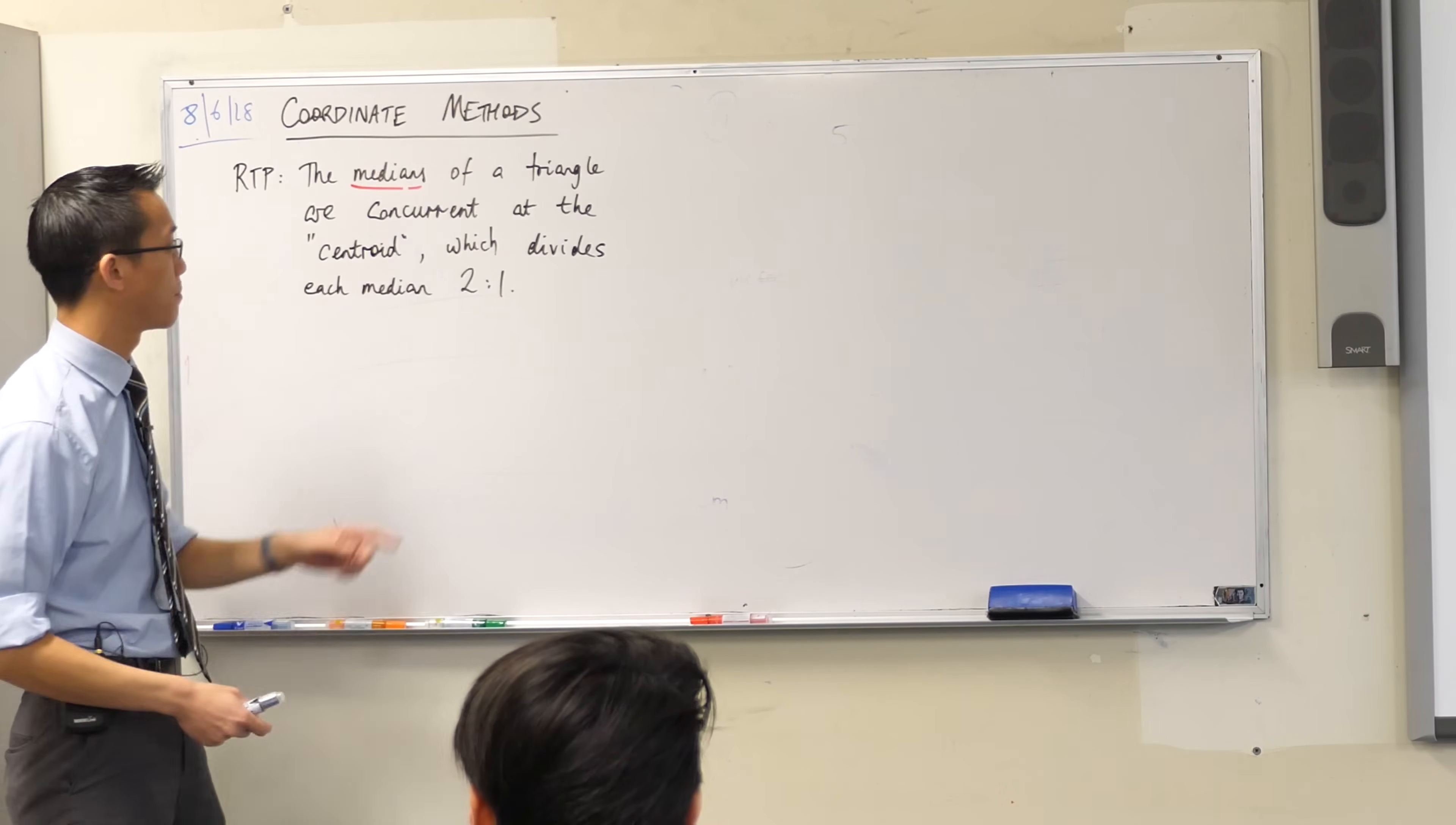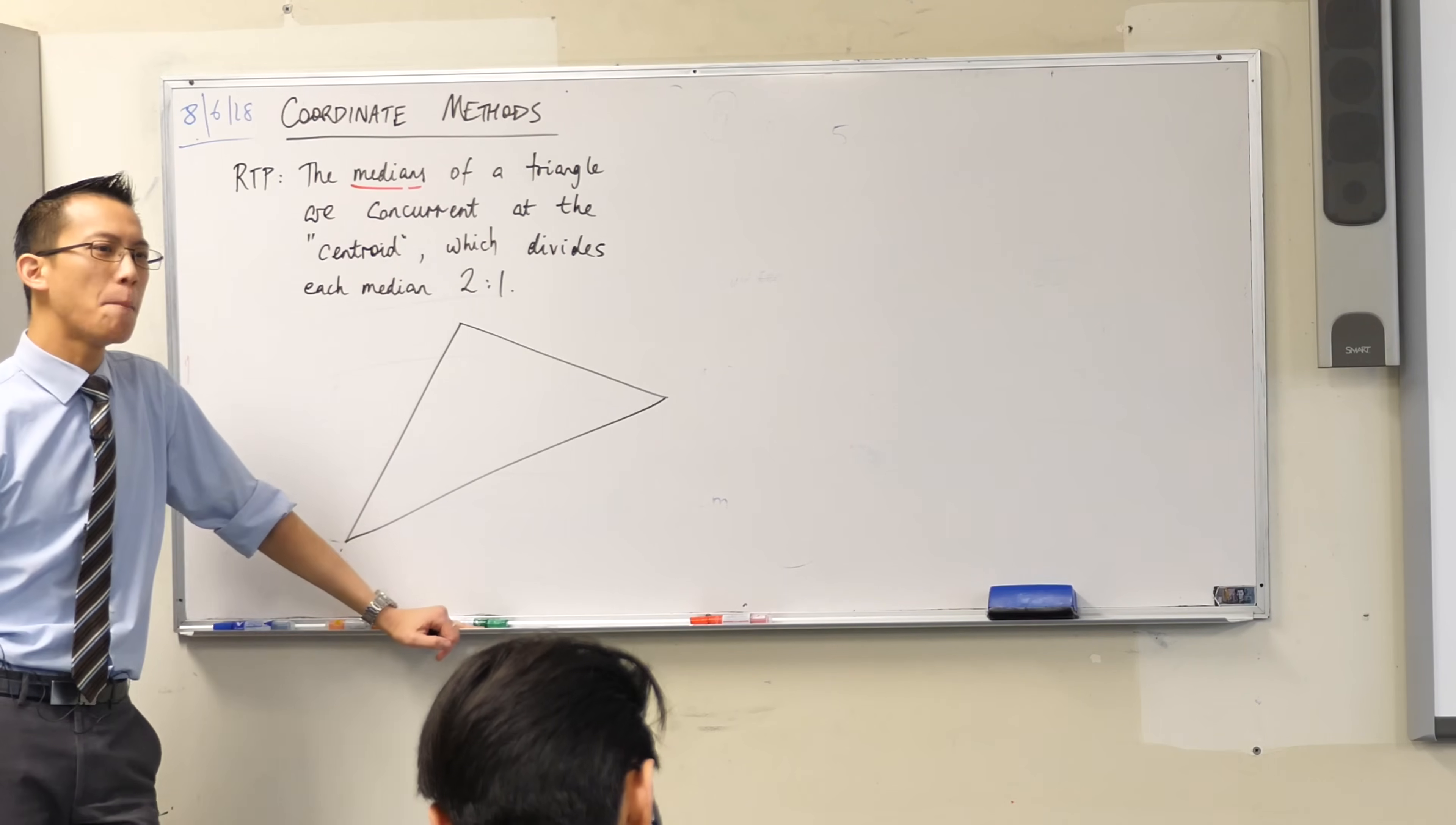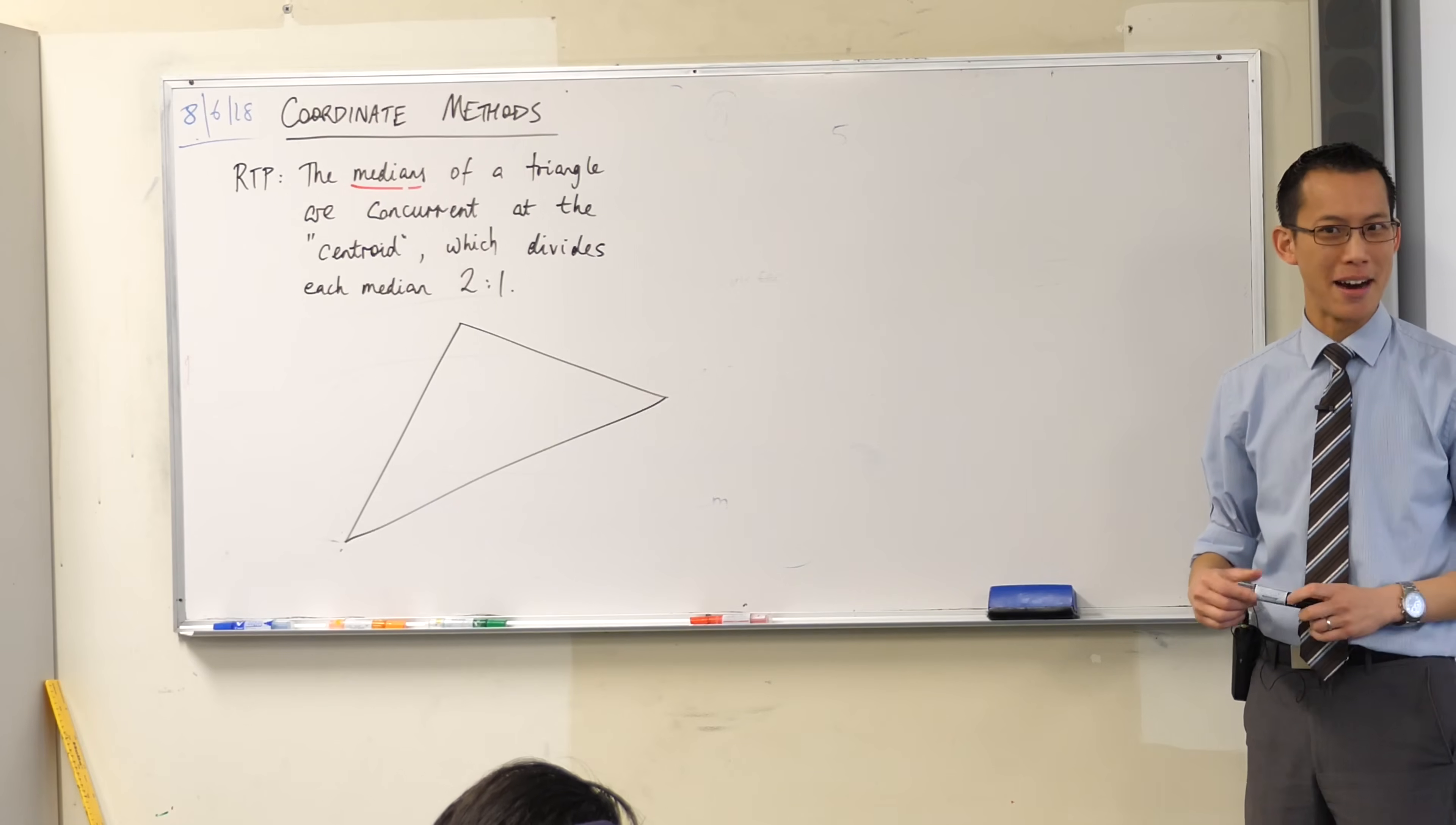So in that context, a median divides something in half. In stats, it's a population. In the context of a triangle, go ahead and draw a triangle if you haven't already. I'm going to draw one that looks like this. If you've got a triangle, what do you think a median might mean in this context? What do you think a median does in a triangle? What do you think it might divide in half?